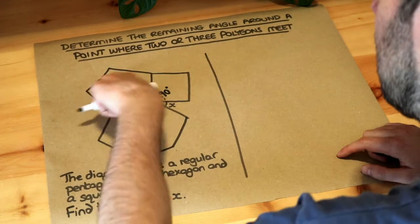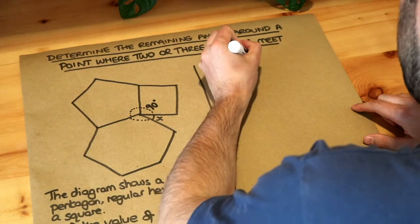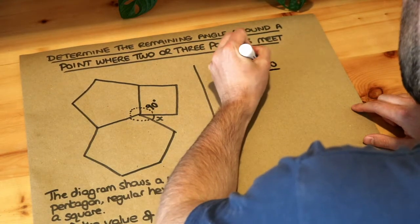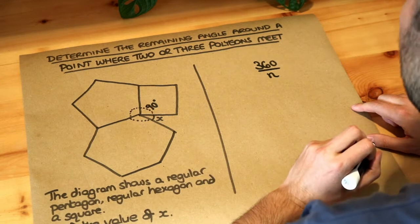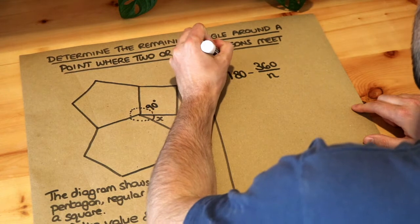So this is a pentagon, it has five sides. Now do you remember the formula for finding each interior angle of a regular polygon? We do 360 divided by the number of sides and then we subtract it from 180, so that's each interior angle.